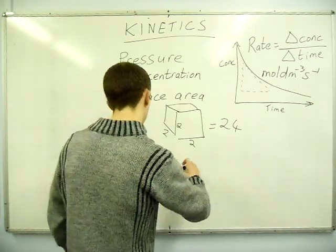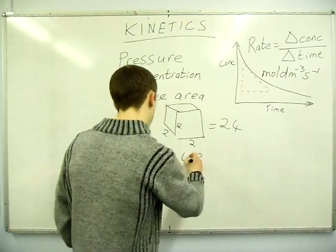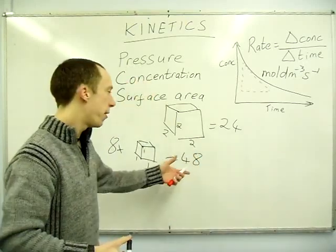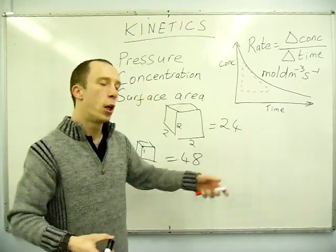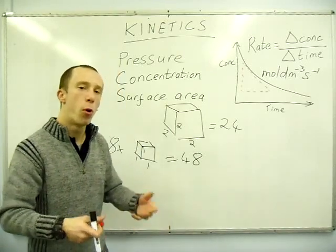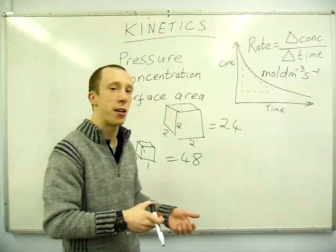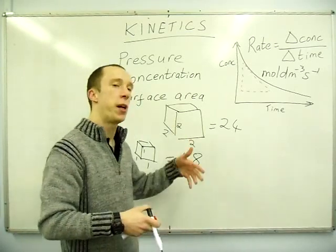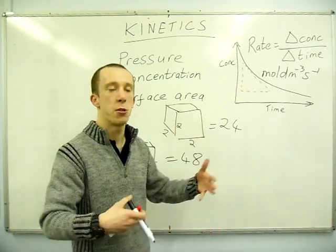So notice the surface area is massively greater. What this means is there is more points of contact, so more reactions can take place per unit of time. Bigger surface area, more collisions, faster rate.